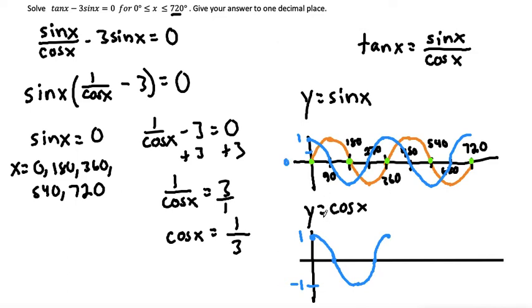So if we draw those, the points where it would be equal to 1 third, that would be like approximately here. Let me use a different color. Approximately here, and then here, here, and here. Because we're looking for where it's crossing this y value of 1 third.